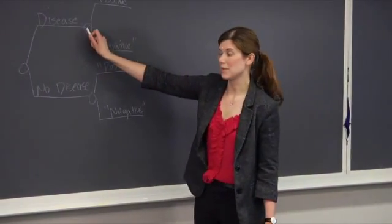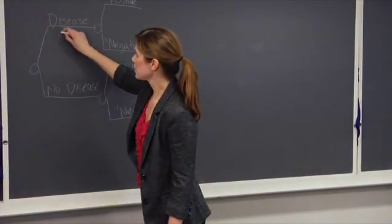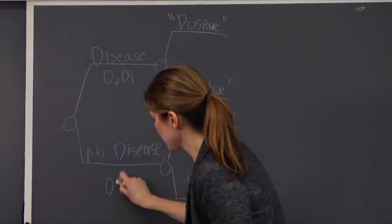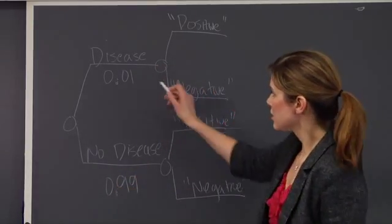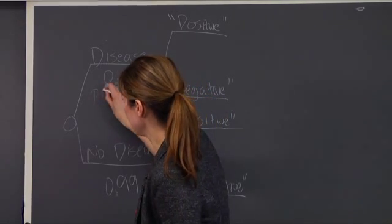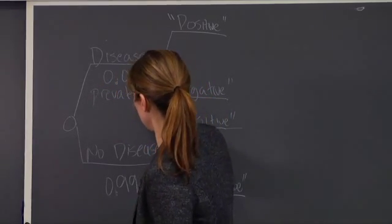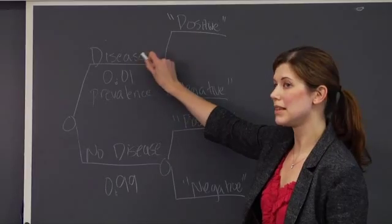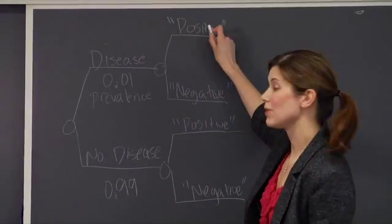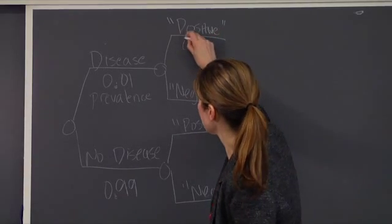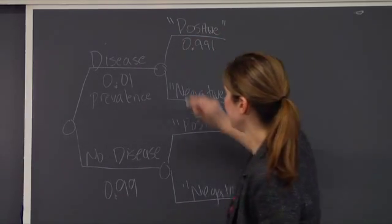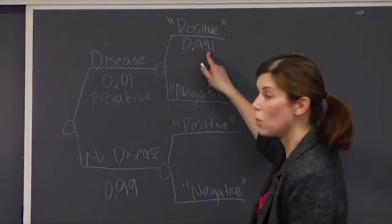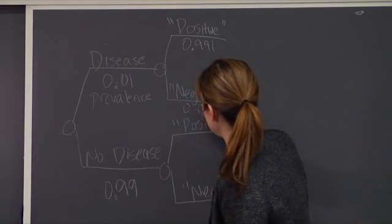In the United States, approximately 1% of the population is thought to have HIV disease, which means 99% of the population does not have the disease. This number corresponds to what's called the prevalence. Given that a patient has the disease, the probability that they have a positive test result is referred to as the sensitivity. In this example, the sensitivity was 99.1%, which means the probability that they have a negative test is 1 minus this, or 0.009.